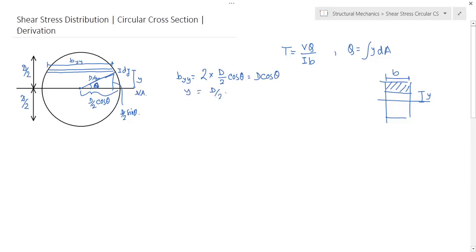So B_y is nothing but 2 times D/2 cos theta, so D cos theta. And y is D/2 sin theta. So what is Q? Q is the integration ∫y dA. y dA means this area, so this is B_y times dy.